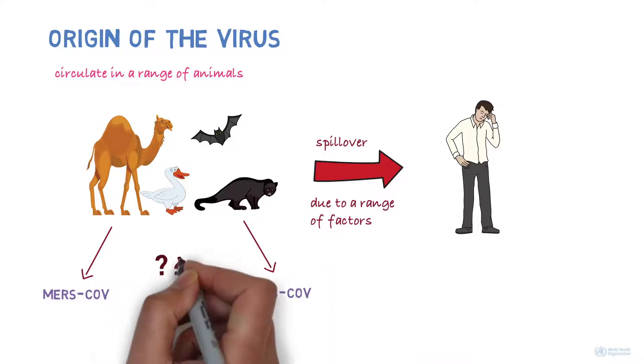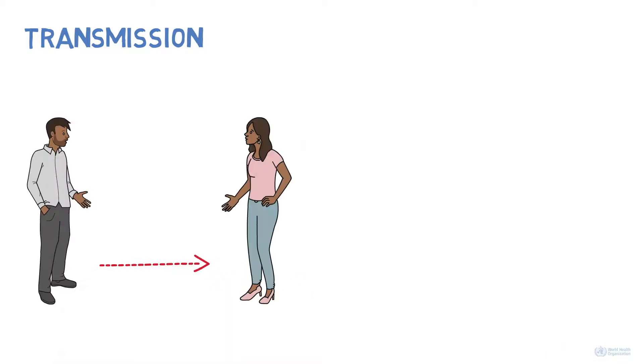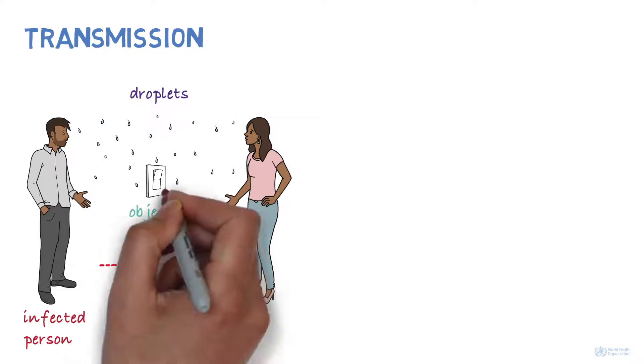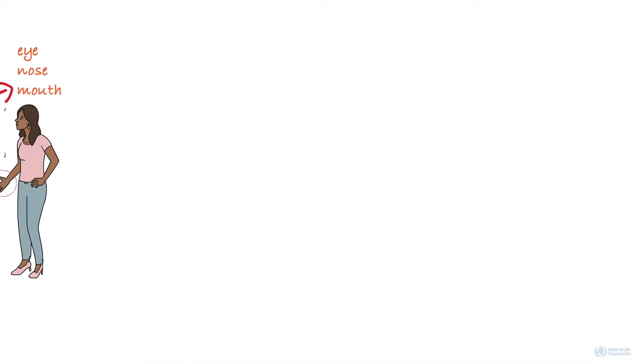The animal reservoir of the new coronavirus is not known yet. How does the disease spread? The disease can spread from person to person through droplets, when an infected person releases those droplets through coughing, talking, or sneezing, for example, when close to another person. It can also spread when infected droplets land on objects, and when another person touches them and then touches their eyes, nose, or mouth.